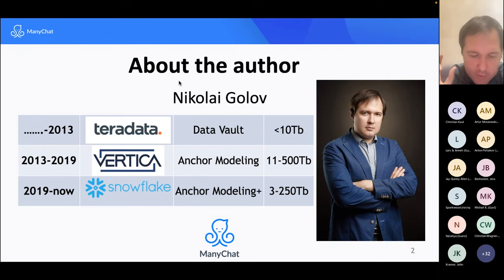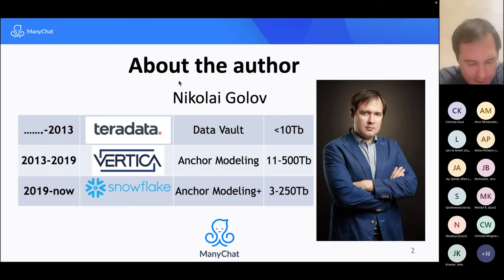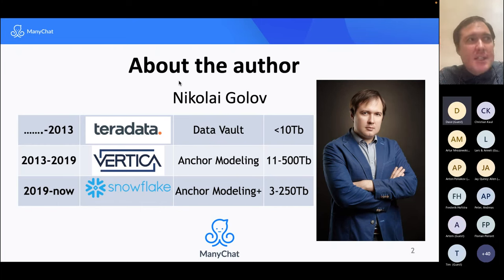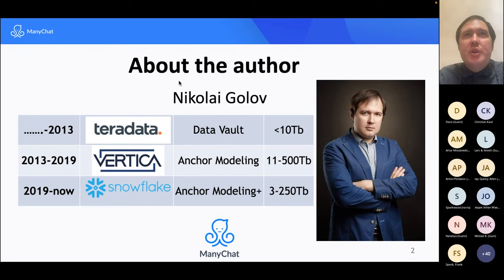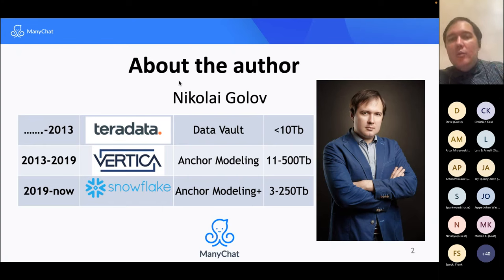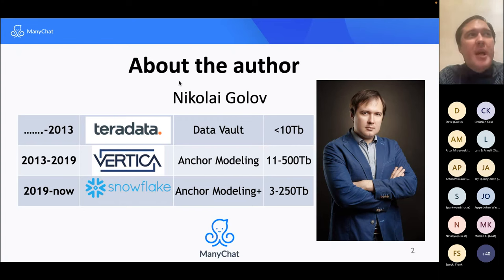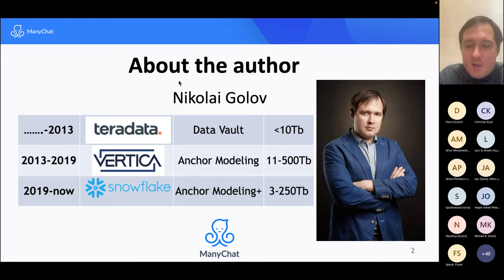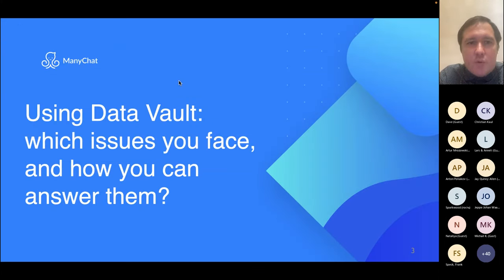One small point I want to focus your attention on: if you look at the data sizes on the slide, those data warehouses are pretty big — 500 terabytes for Vertica, and currently we've almost reached 250 terabytes on Snowflake. These are huge databases you could call big data. If I hadn't used Anchor Modeling or Data Vault, I would definitely have had a petabyte of data.